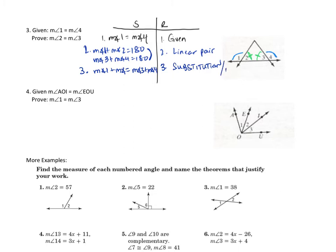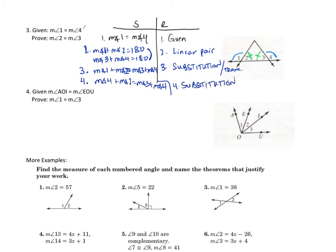You could have said transitive here as well, since if A equals B and B equals C, then A equals C. Now I can substitute angle 4 in for angle 1, so: the measure of angle 4 plus angle 2 equals the measure of angle 3 plus angle 4. This was another substitution step. Both sides have angle 4, so I subtract angle 4 from each side, and step 5 gives us: the measure of angle 2 equals the measure of angle 3 — by a subtraction step.